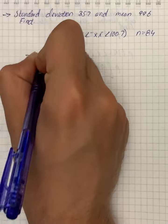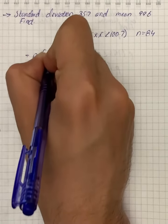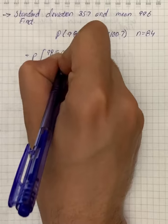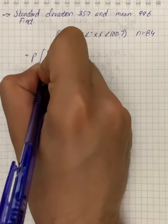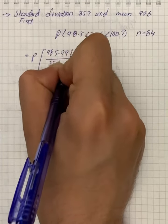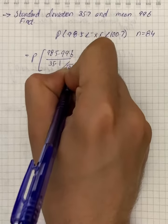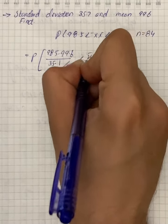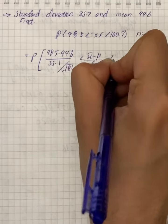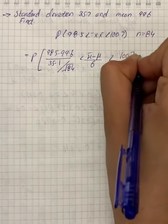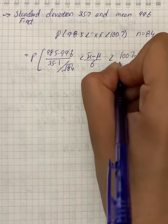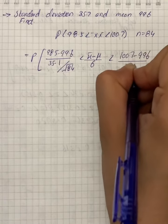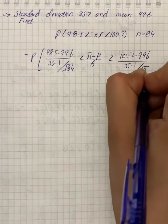So from the condition we can write P of 98.5 minus 99.6 divided by 35.1 divided by the root 84, less than x-bar minus the mean divided by standard deviation, less than 100.7 minus 99.6 divided by 35.1 divided by the root 84.